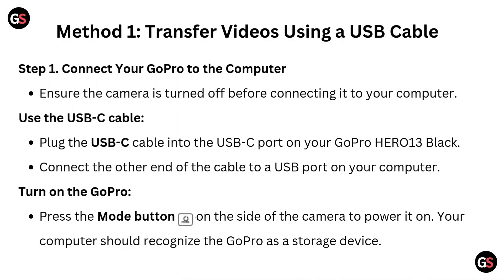Method 1: Transfer videos using a USB cable. Step 1: Connect your GoPro to the computer. Ensure the camera is turned off before connecting it. Use the USB-C cable — plug it into the USB-C port on your GoPro Hero 13 Black, then connect the other end to a USB port on your computer. Press the mode button on the side of the camera to power it on. Your computer should recognize the GoPro as a storage device.